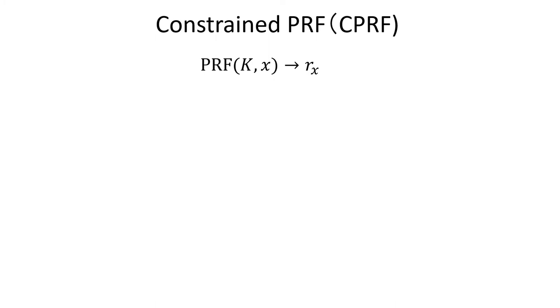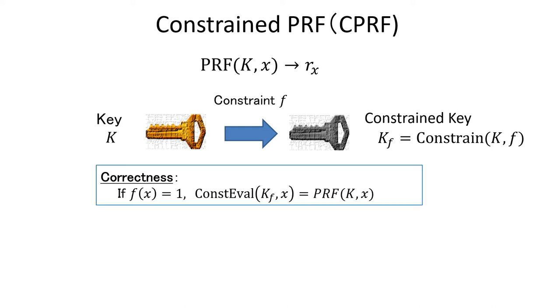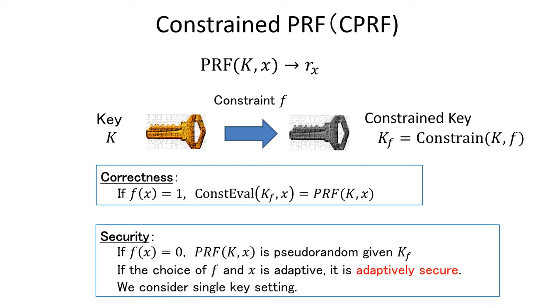Because the framework is based on combination of constrained PRF and lattices, let me explain the notion of constrained PRF first. CPRF is a kind of PRF but with some additional property. In CPRF, we have a constraining operation which takes as input the master secret key, or PRF key, and a circuit f, and outputs a constrained key with respect to the circuit. As correctness, we require that if f(x) equals to 1, we can compute the PRF value on input x using the constrained key. As for the security, we require that the PRF value on input x looks random even if one is given the constrained key for function f such that f(x) equals to 0. If the choice of f and x in the security game is adaptive, it is called adaptively secure CPRF. We also note that we consider the single key setting.